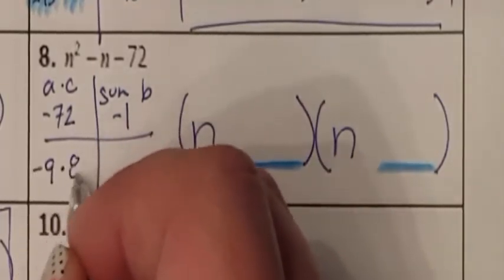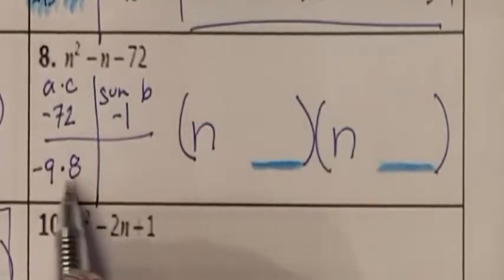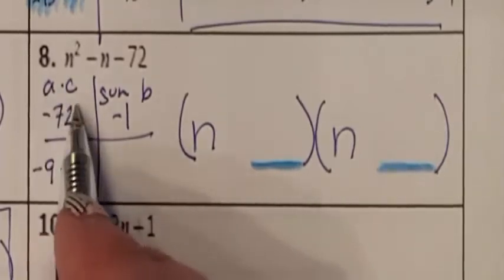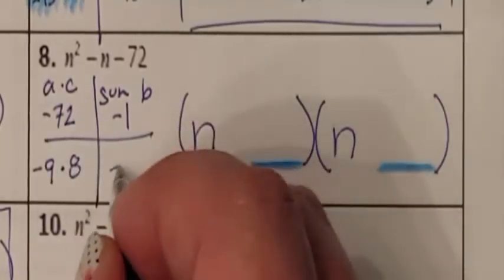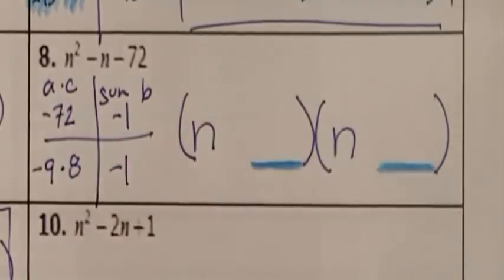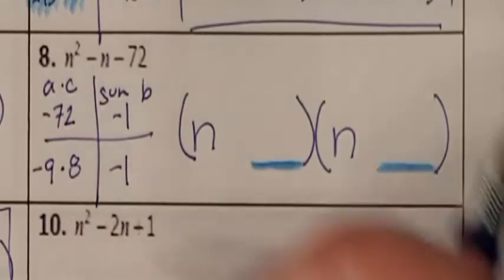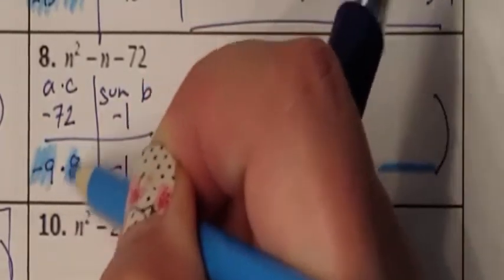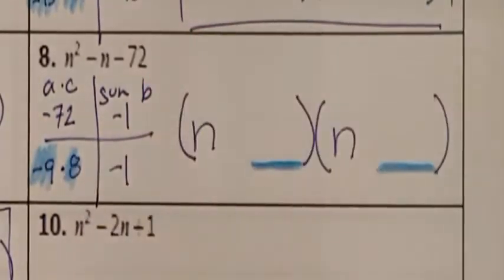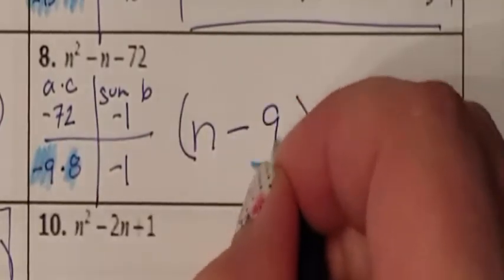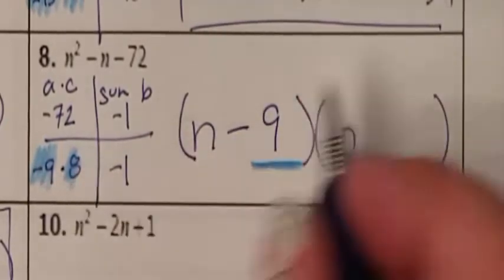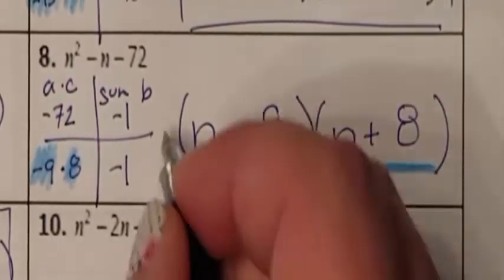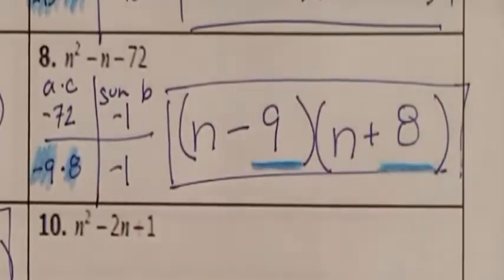Negative 9 and 8 multiply together to give me negative 72. When I add them together, I get negative 1. So the two numbers I needed were negative 9 and 8. Negative 9 is a minus 9, and positive 8 is a plus 8. So I just factored problem number 8.